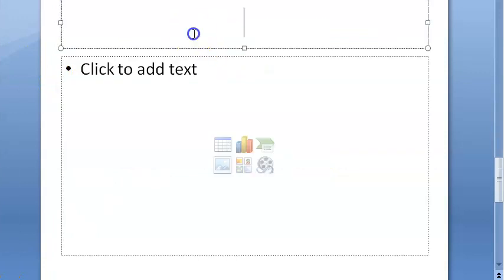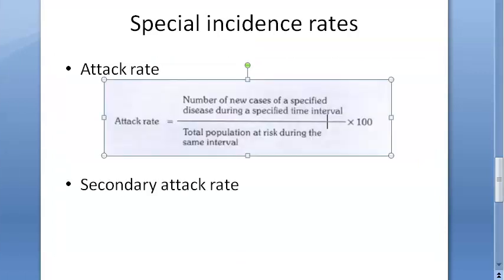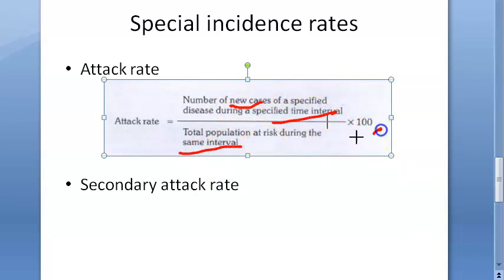Then there are special incidence rates: attack rate and secondary attack rate. Attack rate is used in epidemics when a population is exposed to risk for a limited period of time. The formula: attack rate = number of new cases of a specified disease during a specified time interval divided by the total population at risk during the same interval, multiplied by 100.